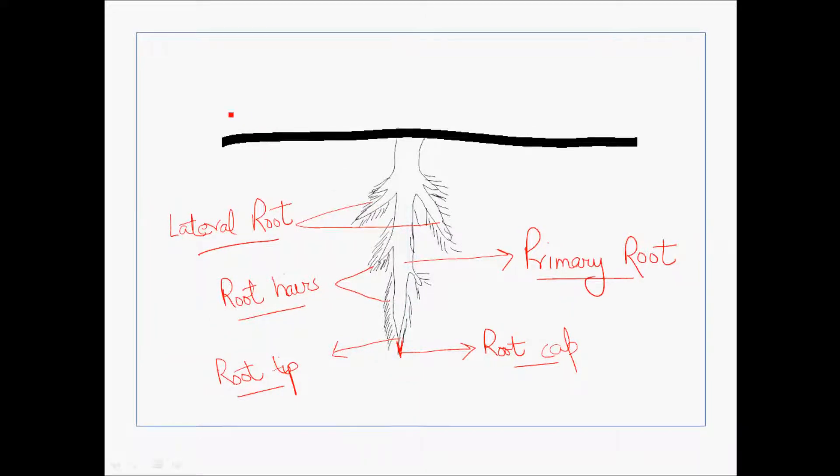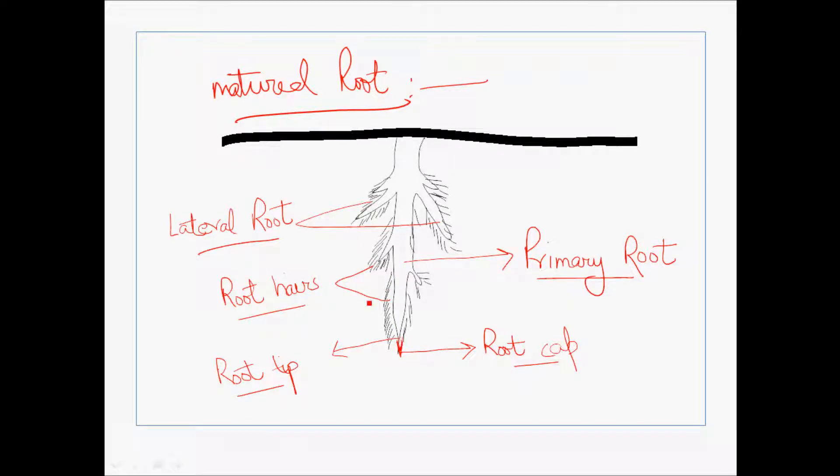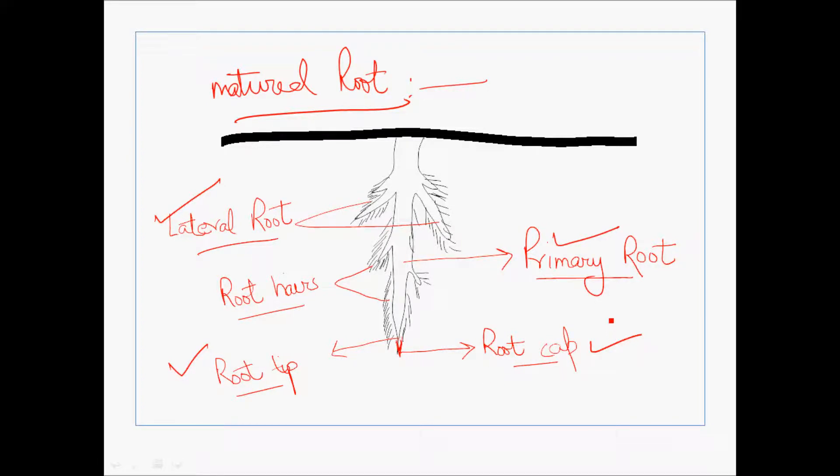How does a matured root look like? You see, this is beneath the ground, where the main root which goes at depth is known as primary root. The sidewise roots are known as lateral roots. Root hairs are present in both lateral and primary roots. The tip of the primary root is known as root tip, which is covered by a root cap, which protects the root tip from getting damaged.